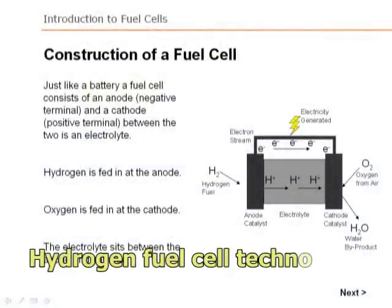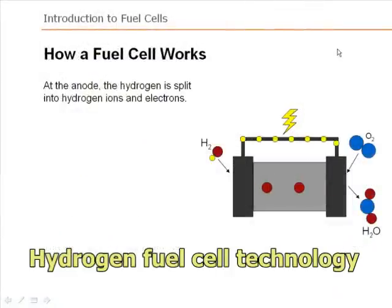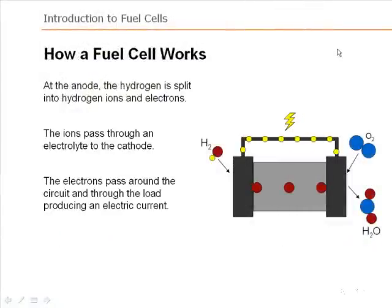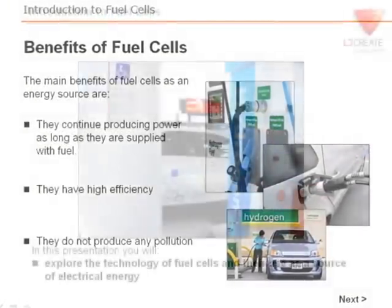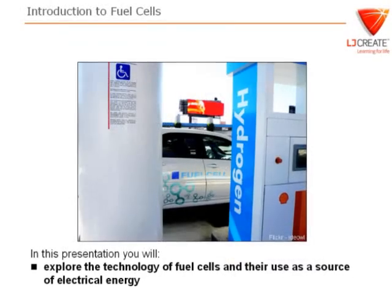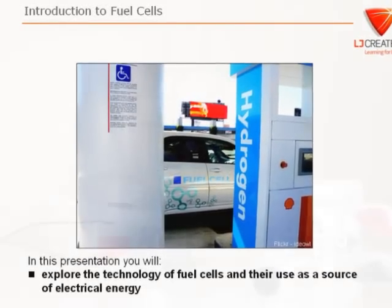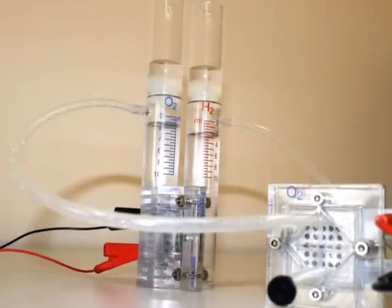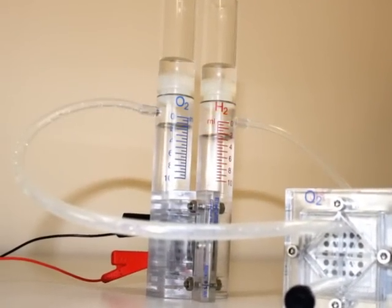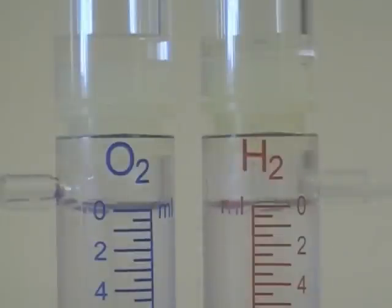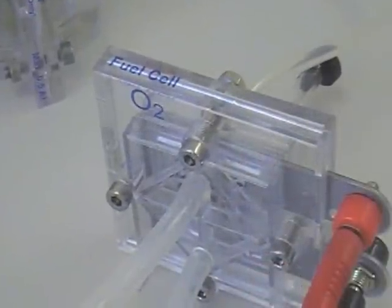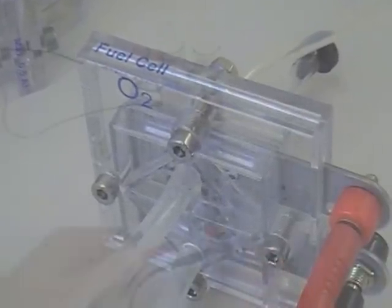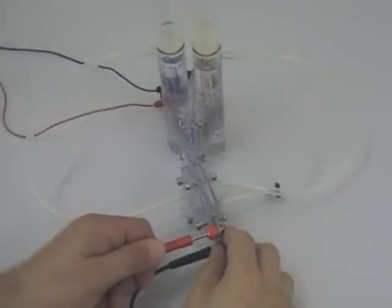Hydrogen fuel cells are a rapidly developing technology. The fuel cell brings, for example, a highly efficient, reliable and low emissions method of powering vehicles. In this module, students use an electrolyzer to produce hydrogen from electricity and store it. A fuel cell is then used to convert the hydrogen back into electricity.